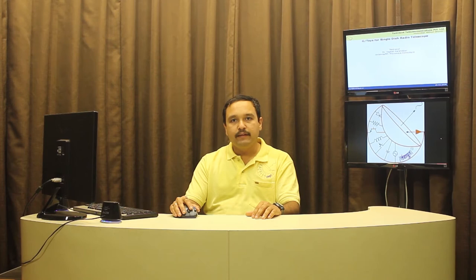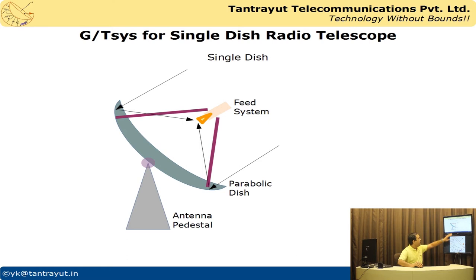To start with, let's look at the screen. What we have is a generic picture of a single dish radio telescope, with a parabolic dish that receives signals from space and focuses them at the focal point where the choke horn or any horn antenna is placed. After the horn antenna comes the rest of the front-end system. Support struts hold the front-end, and the dish is mounted on an antenna pedestal with azimuth and elevation rotation assembly, allowing the antenna to rotate in different directions to receive signals from a particular radio source.